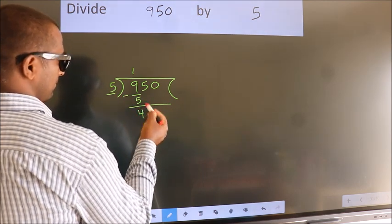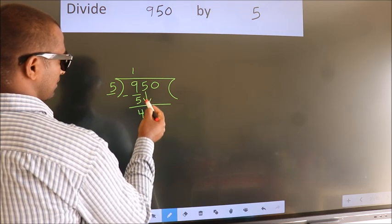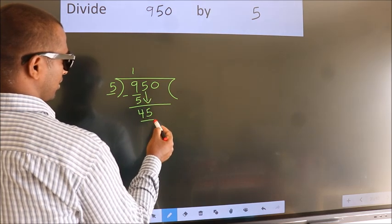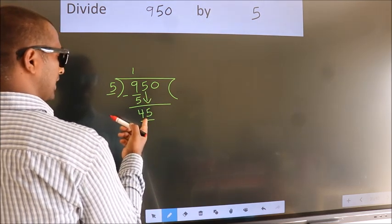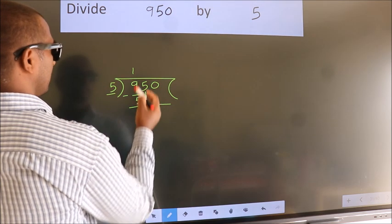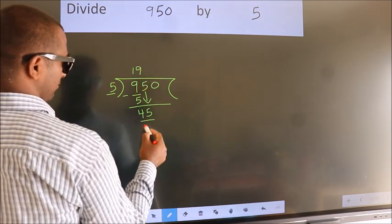After this, bring down the beside number. So, 5 down. 45. When do we get 45? In the 5 table, 5 nines, 45.